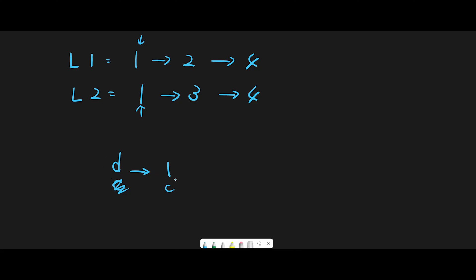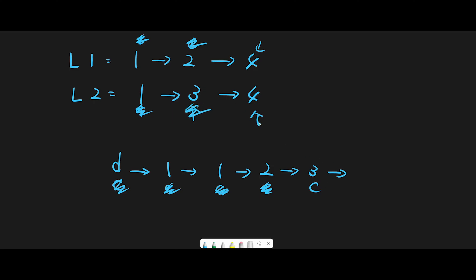We compare two and one and take one, then move current pointer to next. Then compare two versus three and take two, move current pointer to next. Four versus four — take four from list one — move current pointer to next. At last we connect the final four at the last place. Since we created a dummy pointer pointing to the first node one, all we have to do is return dummy.next.